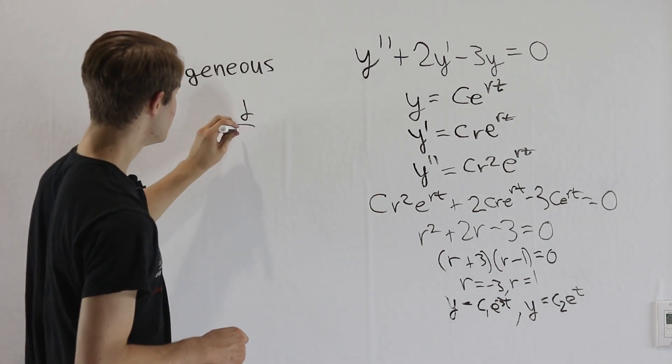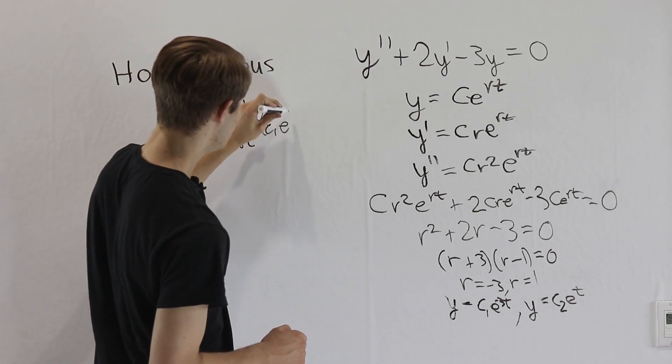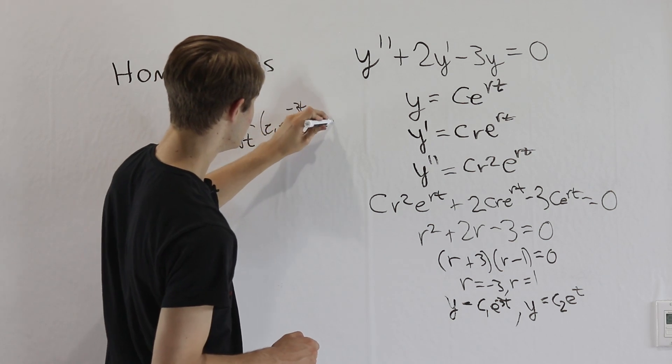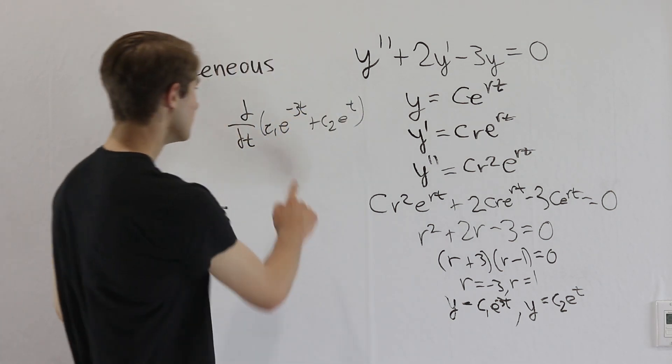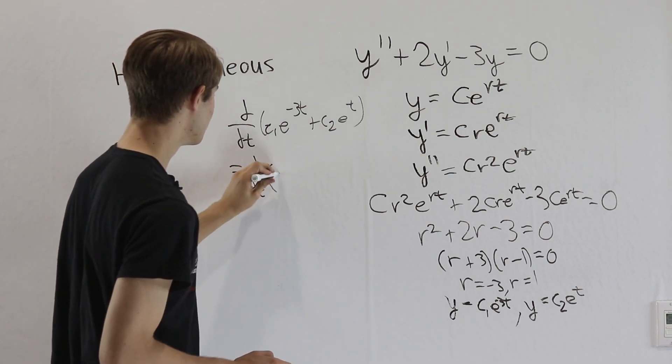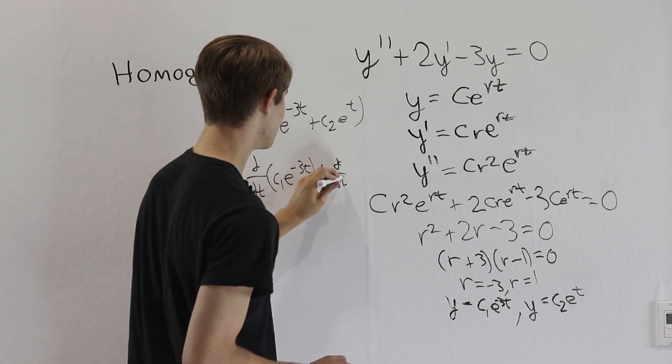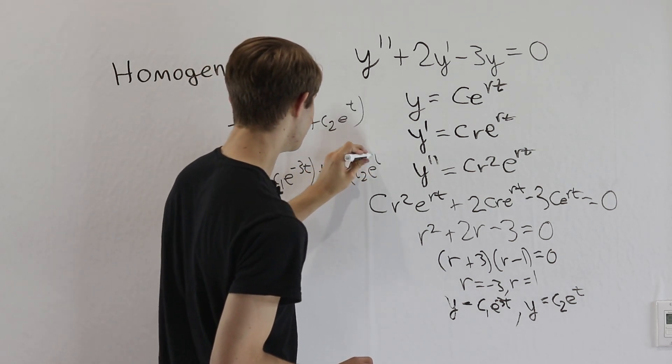Which means if we took the derivative with respect to t of c1, e to the negative 3t plus c2, e to the t, the result that we're going to get is the same as if we took the derivative of c1, e to the negative 3t and then added it with the derivative of c2, e to the t.